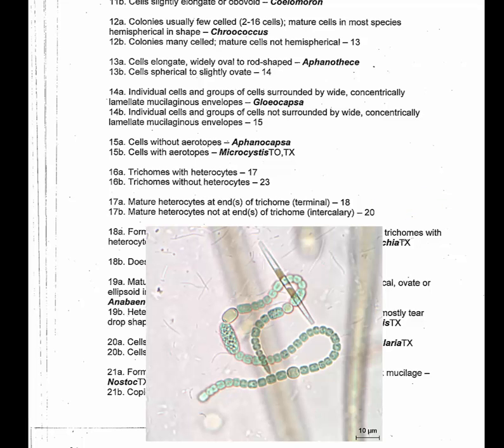So then we go to 17B: mature heterocysts not at ends of trichomes — in other words, that's referred to as intercalary, or in between. So the answer is yes. So then we jump down to 20.